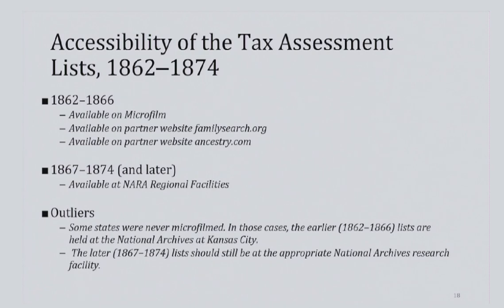Ancestry is a fee-based website that is available for free at all National Archives research facilities, and FamilySearch should be free from any location. For these records, as is the case with all digitized records, the National Archives will not pull the originals. The lists beginning in 1867 were sent to their corresponding regional facilities, and you can use the handout provided with this presentation to find out which regional facilities you should contact.